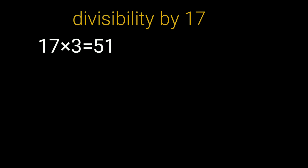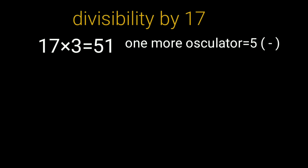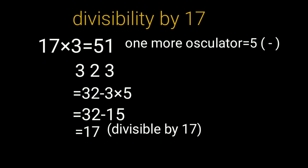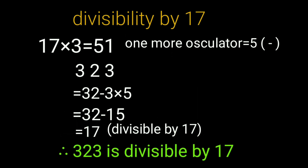For better understanding: 17. For 17, multiply 3 times: 17 times 3 equals 51. 50 plus 1 — one-more oscillator. 50 is 5 into 10 times, so oscillator value is 5. Example: ones place is 3. 3 into 5 equals 15. Rest of the number is 32. 32 minus 15 equals 17. That is in the 17 table, so 323 is divisible by 17. How easy is this!